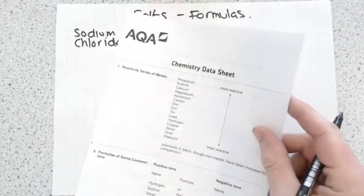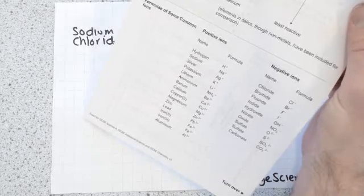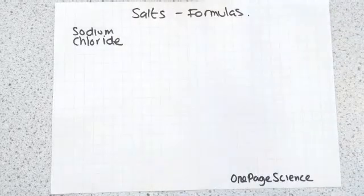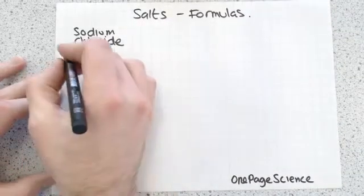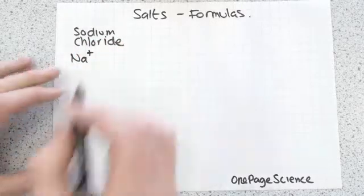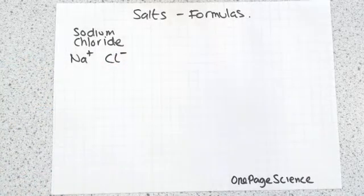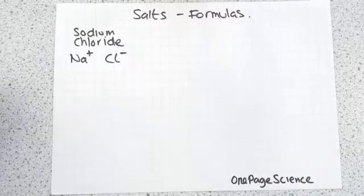First thing you've got to do is get yourself a periodic table. If you're doing AQA, in the back of the data table you have this thing where you can look up the charges of all your ions. For sodium you look it up and you'd find that sodium is Na+, and you look up a chloride and you'll find that chloride is Cl-.